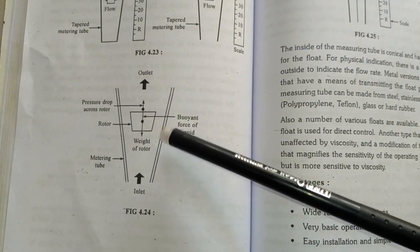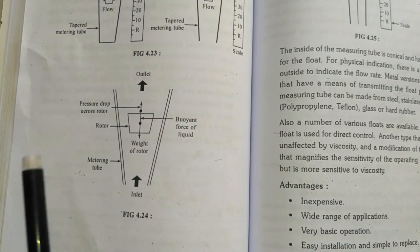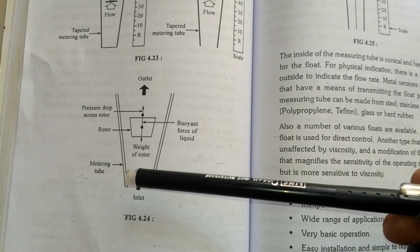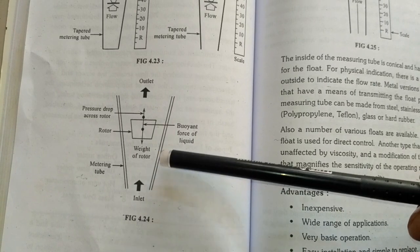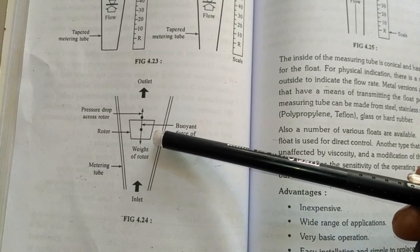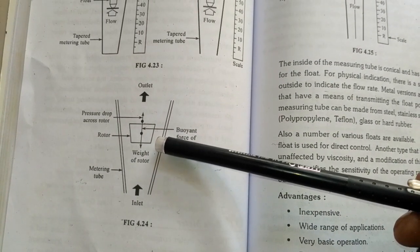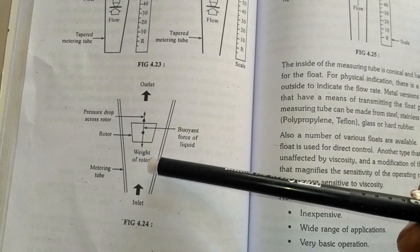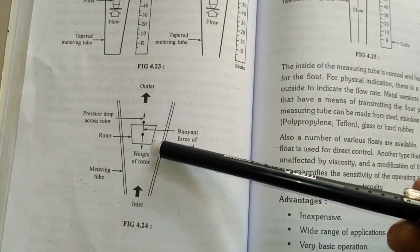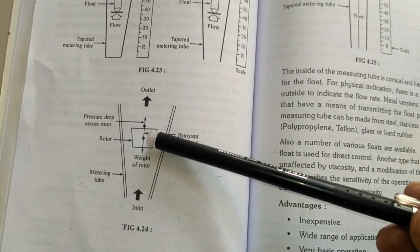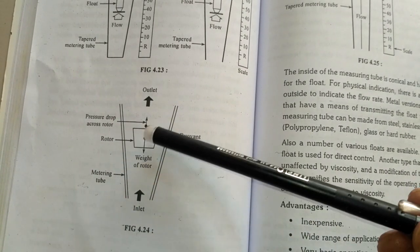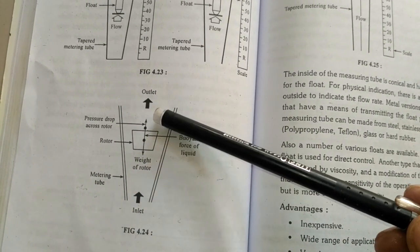This is the basic principle diagram. This is the measuring tube. The inlet. The rotor is the float. The weight of the rotor. The buoyancy force of the liquid. The pressure drop is across the rotor. This is the outlet.